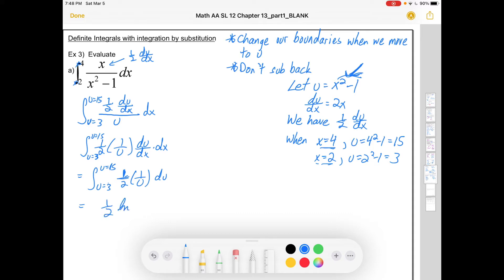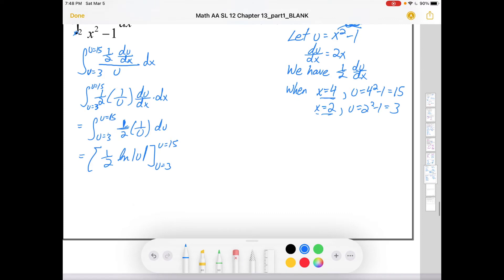So I changed the boundaries and I rewrote in terms of u. At this point the actual integration should be very easy. 1 half stays and this is ln absolute value of u. And we've got that from u equals 3 to u equals 15. You can just sub back in here. And I'll show you how to do it if you don't want to sub in.